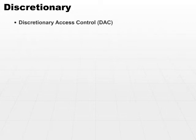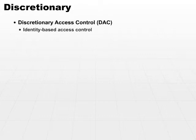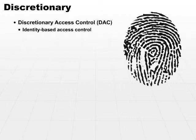Let's take a look at a few specific access control techniques. The first is discretionary access control, DAC. Discretionary access control gives the owner the opportunity to specify access restrictions. It's identity-based access control, which means that you must be authenticated as a specific user, and based on your user privileges, you can specify who else can access that particular object.